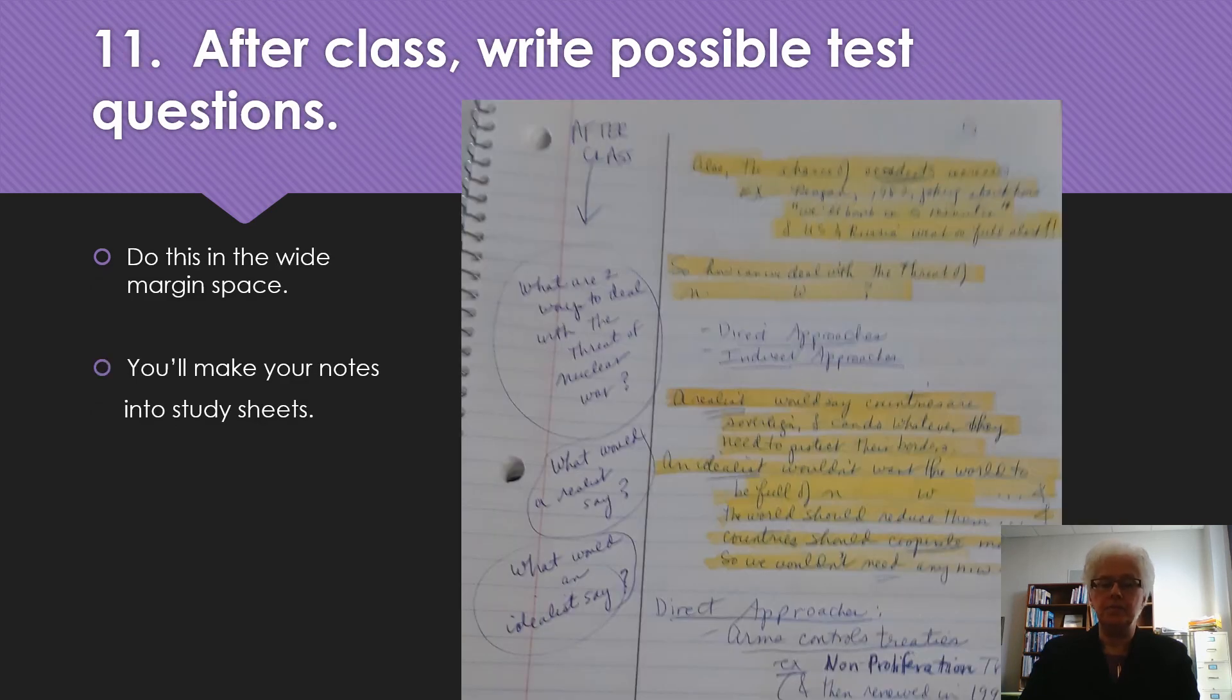Suggestion number 11: after class, write possible test questions. So remember this two-inch margin space. You probably don't have too much in it during class. So after class, you can write two or three or four questions per page, imagining the kind of questions your professor might ask. This not only helps you think about your notes more deeply, it also sets you up to study.